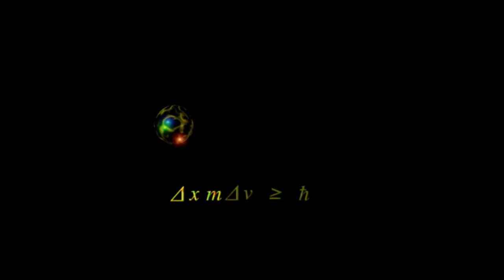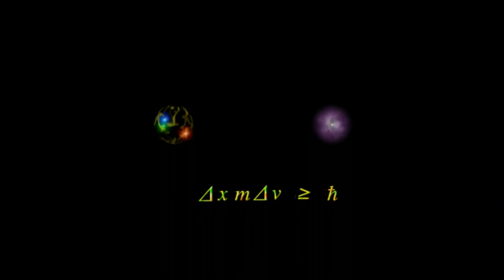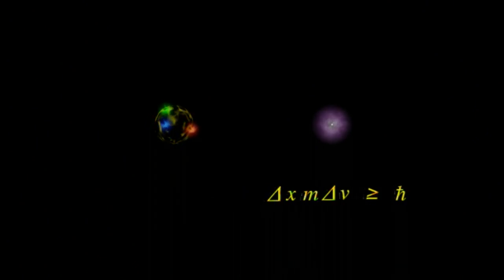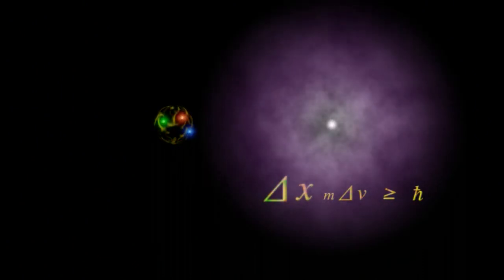Without going into too much detail, let's look at a proton and an electron. Since the electron has a very tiny mass, it can occupy a very large region of space.